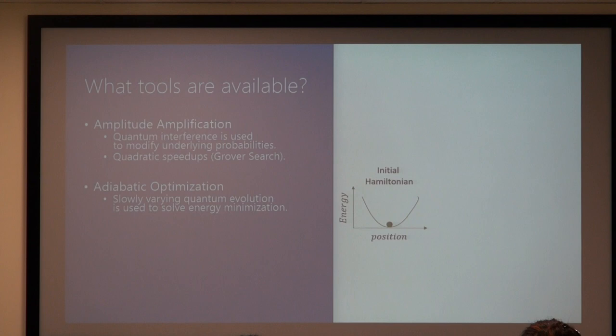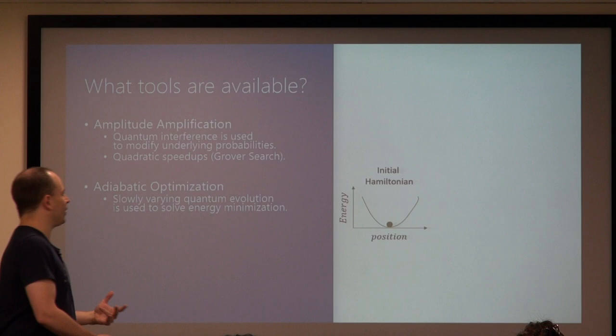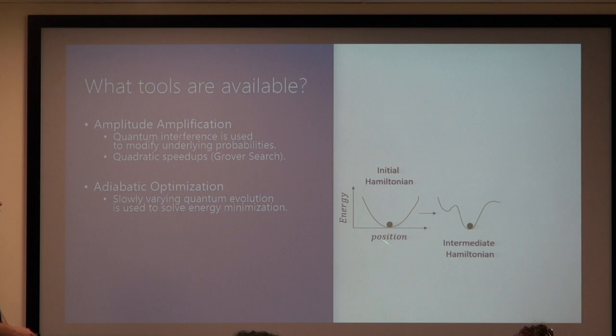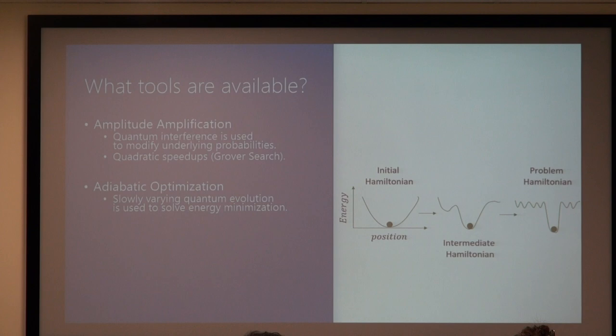The next thing people look at—and Rolando talked about this previously—is using adiabatic optimization to solve problems. Say we look at a machine learning problem that boils down to optimization: we map it to an energy minimization problem, then solve it using an adiabatic or adiabatic-like algorithm, gradually modifying the Hamiltonian from one where we can trivially find the minimum energy configuration to a hard one. If we do this slowly enough, we get the solution. This has provided inspiration for approaches like the Quantum Approximate Optimization Algorithm (QAOA).